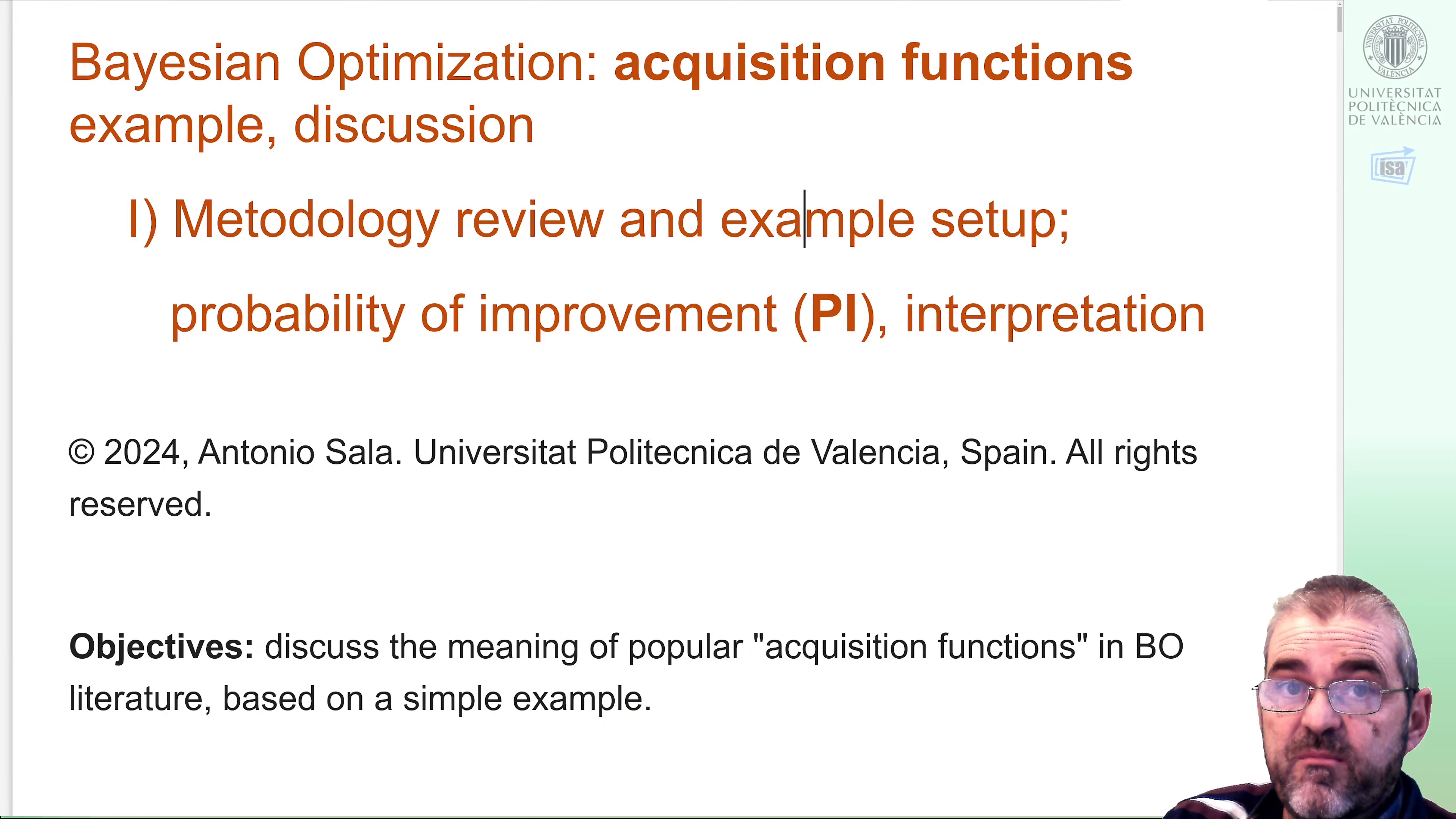We'll start by reviewing the methodology and setting up an example, and then we'll discuss the meaning of the probability of improvement acquisition function as a starting point, and then in a sequel video we'll discuss the meaning of other options for those acquisition functions.